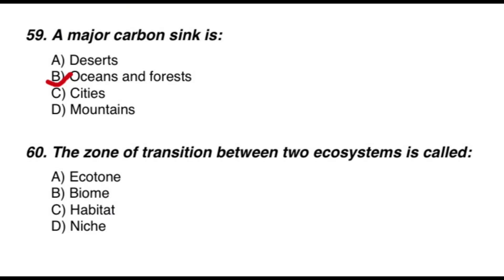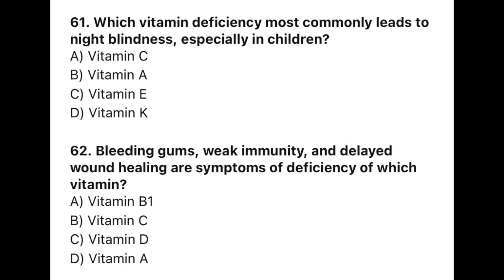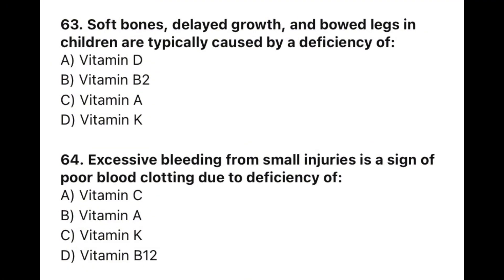Question 60: The zone of transition between two ecosystems is called — the correct option is A — ecotone. Question 61: Which vitamin deficiency most commonly leads to night blindness, especially in children? The correct option is B — vitamin A. Question 62: Bleeding gums, weak immunity, and delayed wound healing are symptoms of deficiency of — the correct option is B — vitamin C.